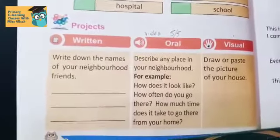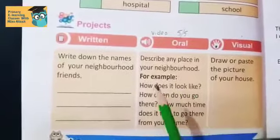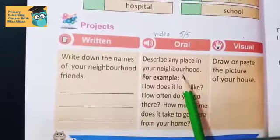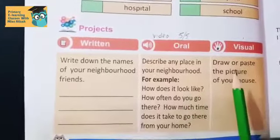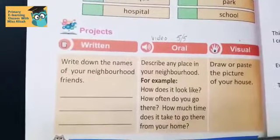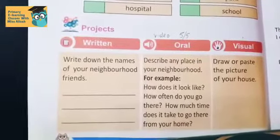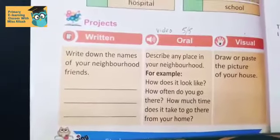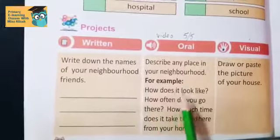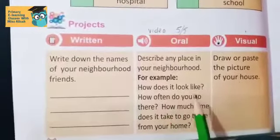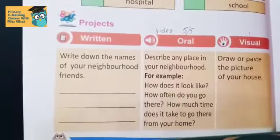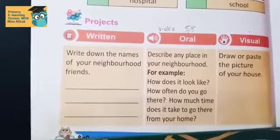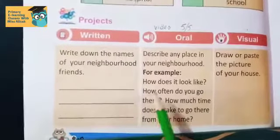Part B: describe any place in your neighborhood. You have to describe any place which is near your neighborhood — that could be a hospital, school, mosque, or a big park. For example, describe how it looks: is that place very big, very small, fancy, or normal? You have to describe how it looks.